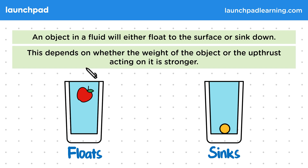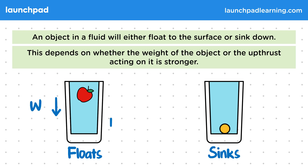Whether an object floats or sinks depends on whether the weight of the object or the upthrust acting on it is stronger. The weight is a downward force that acts on an object due to gravity, while upthrust is an upward force that acts on submerged objects due to a pressure difference. So for the floating apple, it has a small downward weight force, labelled W, and a larger upthrust force, labelled U. The apple accelerates in the direction of the larger force, which is why the apple moves up towards the surface.